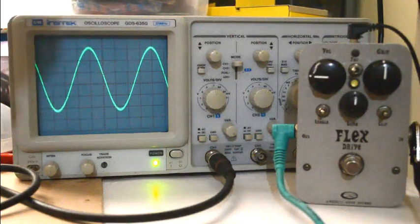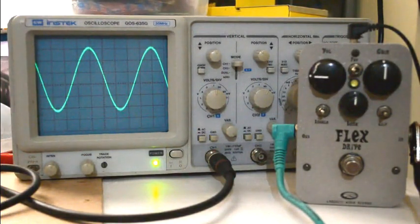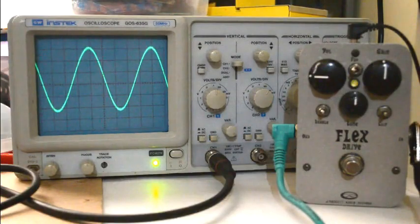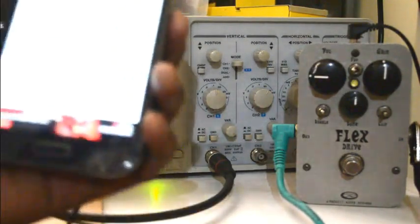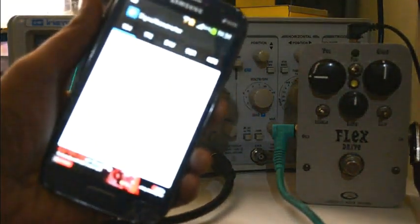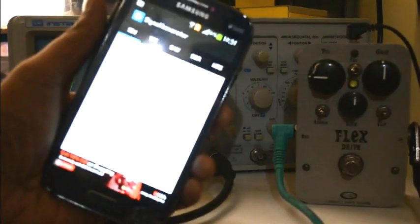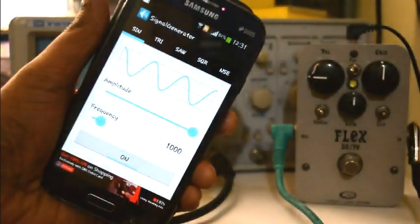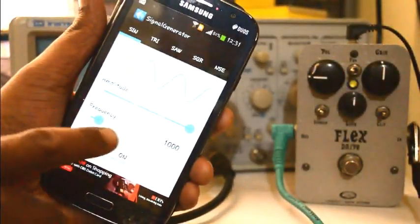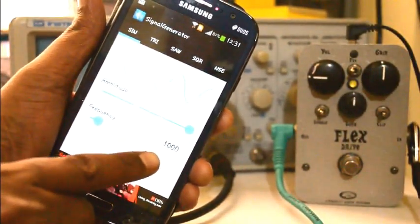Hey guys, this is a little experiment I thought I would do on my Flex Drive just to see how it looks on a scope. What I've done here to test is I have my phone signal generator, which I think you can see now. It is set at 1000 hertz, that is 1 kilohertz.